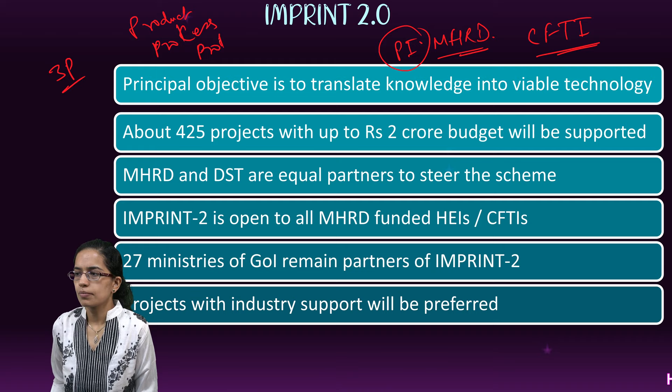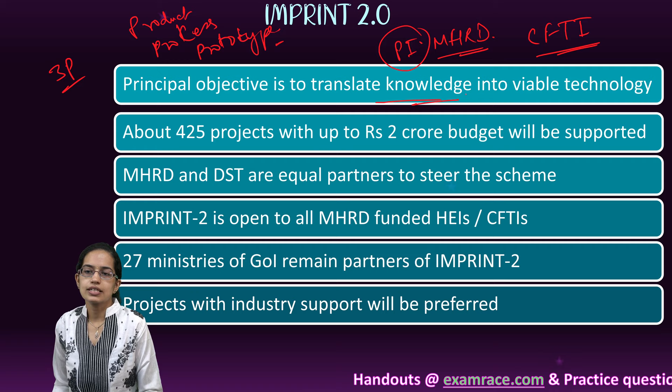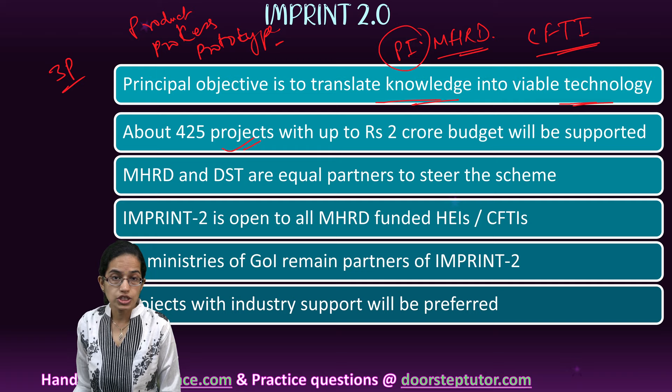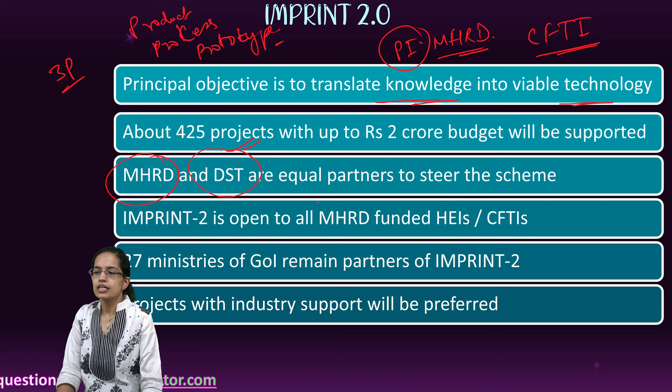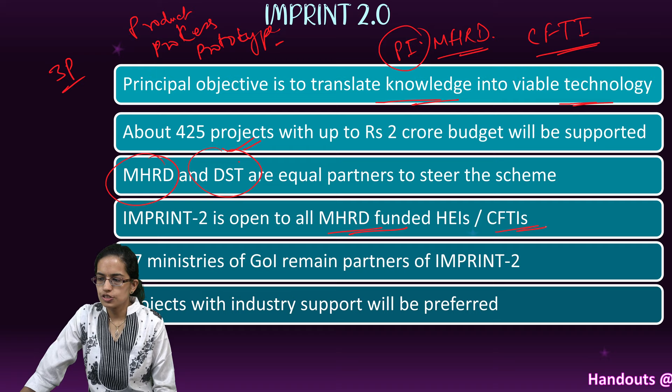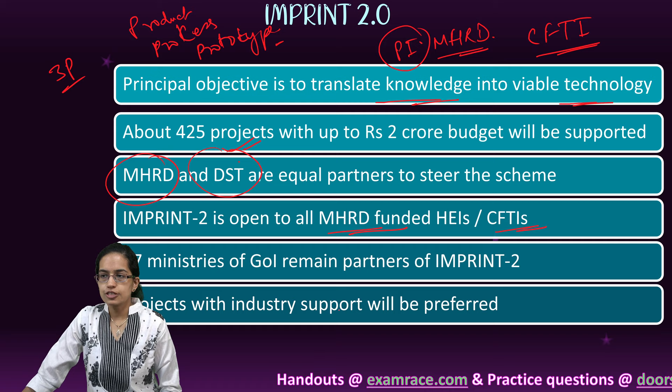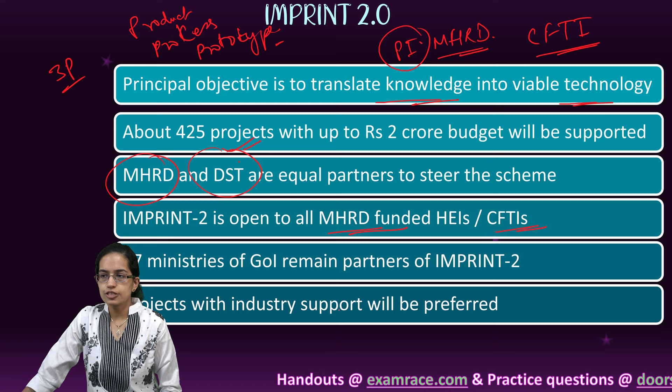Key highlights of IMPRINT 2.0 include converting translational knowledge into viable technology, with numerous projects and significant budgets. MHRD and DST are equal partners. It is open to all MHRD-funded higher educational institutions and centrally funded technical institutions. 27 ministries of the Government of India are now partnering under IMPRINT 2.0, and industry support is also available in certain cases.